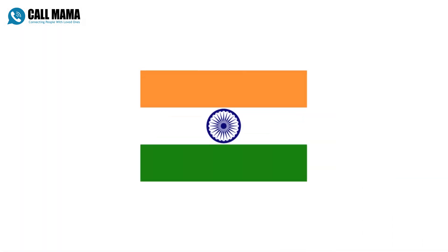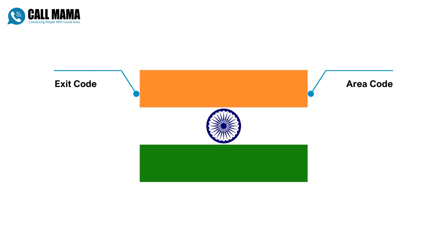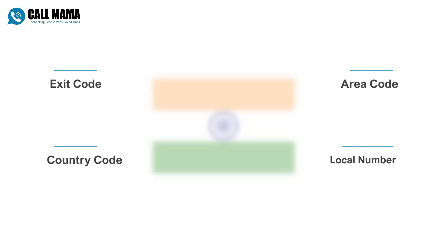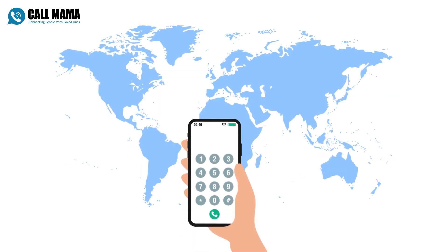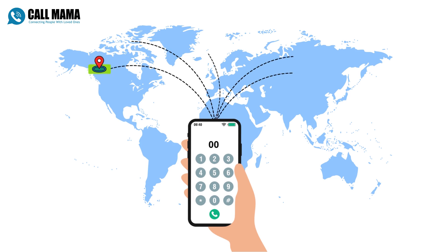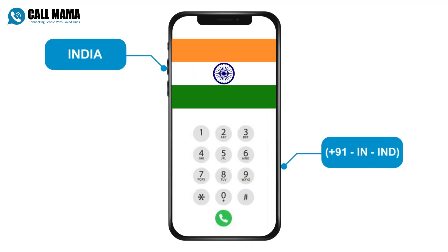An Indian phone number consists of three main parts. First, the exit code. The exit code for most countries is 00, but it can vary depending on your location. Second, the country code. The country code for India is 91.